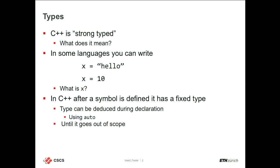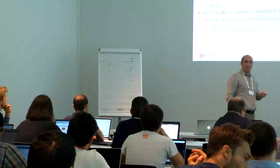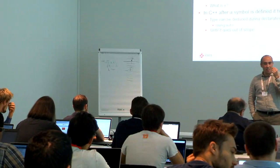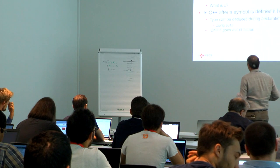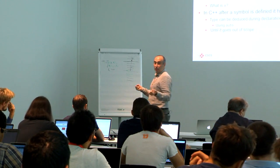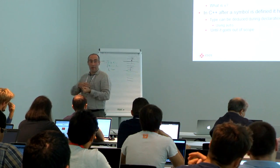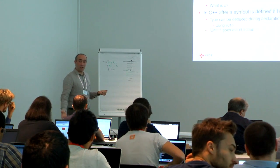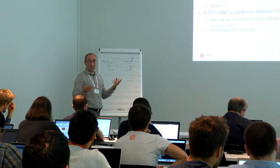Some languages don't have this constraint. You can write x equal 'hello' and soon after x equal 10. People regard this as a good feature, but I think it's really dangerous and horrible — and it's intrinsically slow. Basically, every time I need to look at x, I don't know what type it is. I need to query some runtime system information, go to a hash map or something.